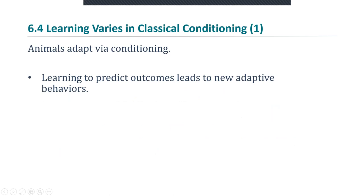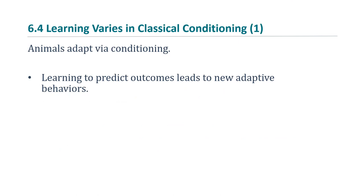Animals adapt via conditioning. Animals learn to predict what objects bring them pleasure or pain. In order to survive well, you need to know things that are good for you, like things to eat, and you need to know the dangers. So learning to predict outcomes leads to new adaptive behaviors.